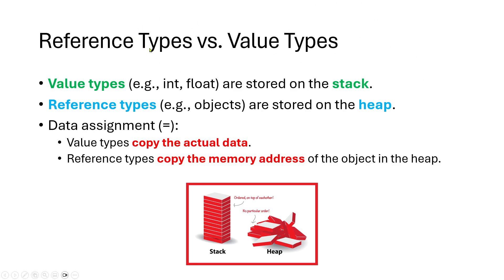An exceptionally important topic we're going to talk about a lot more is the different types of data we can deal with and how they interact with memory. We have two main types: value types and reference types. A value type stores actual values — things like integers, floats, booleans, what we call primitive data types — and these are stored on something called the stack in your computer's memory. Reference types are things like objects, stored on the heap in your memory. We'll look at what these two types mean and what the stack and heap are.